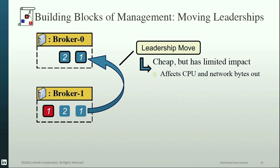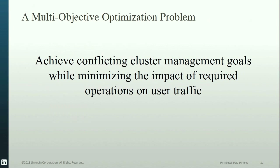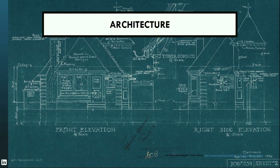At a high level, Cruise Control tries to solve a multi-objective optimization problem. It works on a number of conflicting goals while also trying to minimize the operational side effects of this process. With the incentives and objectives of Cruise Control now clear, let's look at how Cruise Control achieves these objectives by examining its architecture.